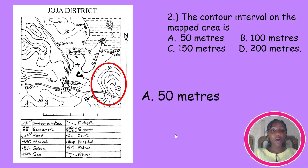Looking at the map and the options, it is possible for someone to just skim the question, pick out the word contour, and assume the question is asking for the highest interval on the map. It may look funny, but don't underestimate exam tension. Always try to calm down and pick the correct answer. It's good to be fast, but accuracy is equally, if not more, important.